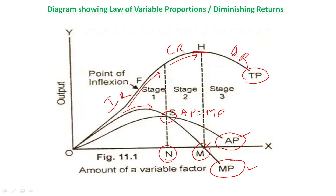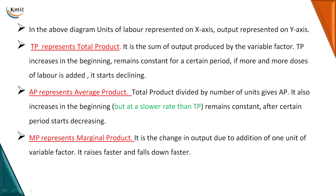Observing from the first stage: output increases to point F, and when more inputs of labor are increased, output increases further but at a declining rate until it reaches the maximum point H. After H, the total output declines and the marginal product of labor MP becomes negative. This indicates that additional units of labor are not contributing positively to total output — even if labor is increased further, it is not worth using it. TP represents total product, the sum of total output produced by the variable factor.